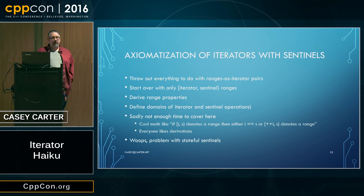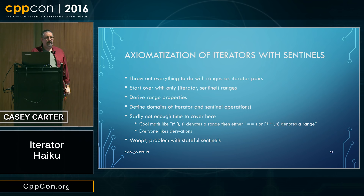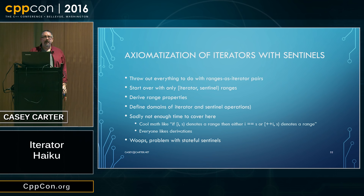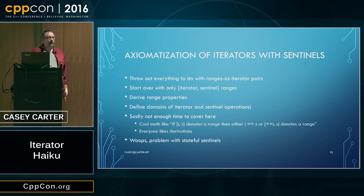I needed to throw out everything I already knew about ranges as iterator pairs and start over, axiomatizing iterators and ranges just from the iterator-sentinel model of denoting a range. Instead of saying a range is an iterator pair or an iterator and sentinel, I wanted to start over with only the iterator-sentinel abstraction and see if I could derive all the range properties. This had the nice side effect of requiring me to define the domains of the iterator and sentinel operations, which we hadn't explicitly specified in the Ranges TS.